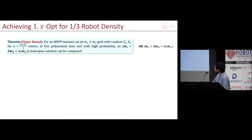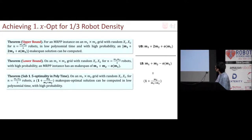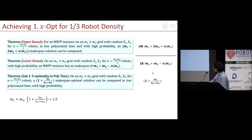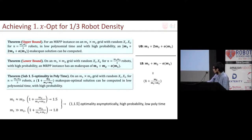I will highlight how we achieve sub-1.5 optimality for one-third robot density. To get the optimality guarantee, we first establish a makespan upper bound of M1 + 2M2 in our algorithms. We also establish a lower bound of M1 + M2, and comparing the two bounds yields an optimality ratio of 1 + M2/(M1 + M2). When M1 and M2 are similar, the ratio is about 1.5; if M1 is much larger than M2, the ratio approaches 1. Overall, we achieve 1-to-1.5 asymptotic optimality with high probability in low polynomial time.